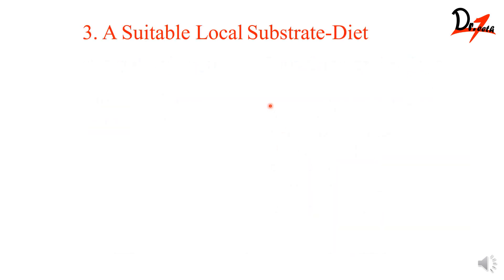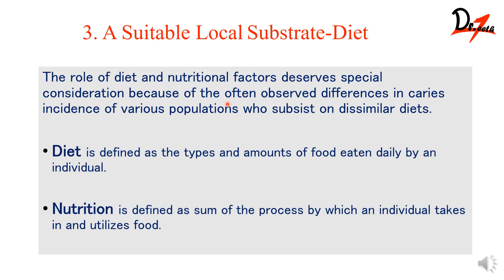Now the third factor: the suitable local substrate. Diet and nutrition are very important. Early humans ate rough, coarse food, which provided mechanical cleaning of the tooth surface. In our generation, we consume processed, canned, very soft foods, so that mechanical cleaning is greatly reduced. This is a major reason why our generation is more caries prone.